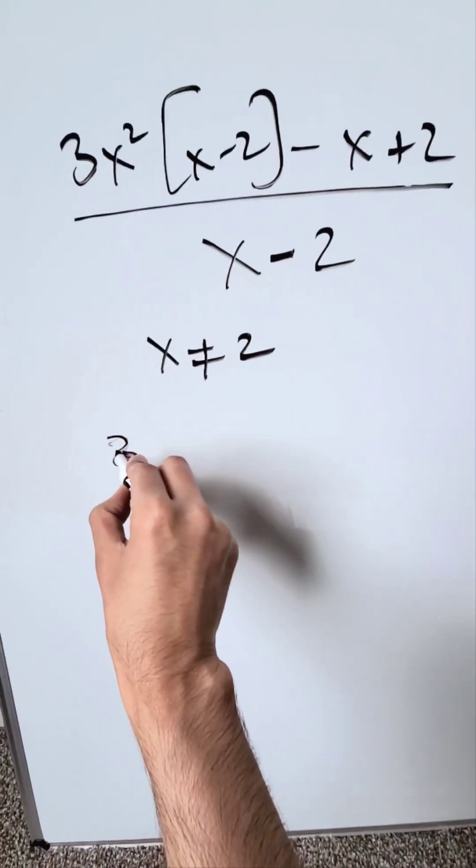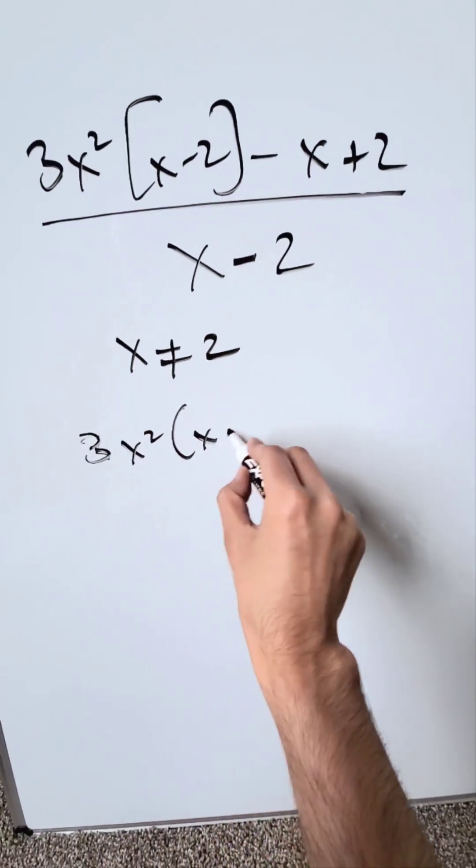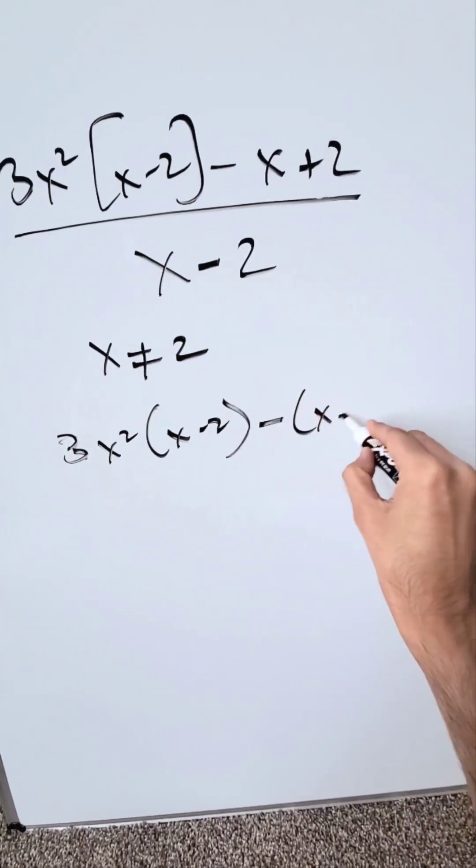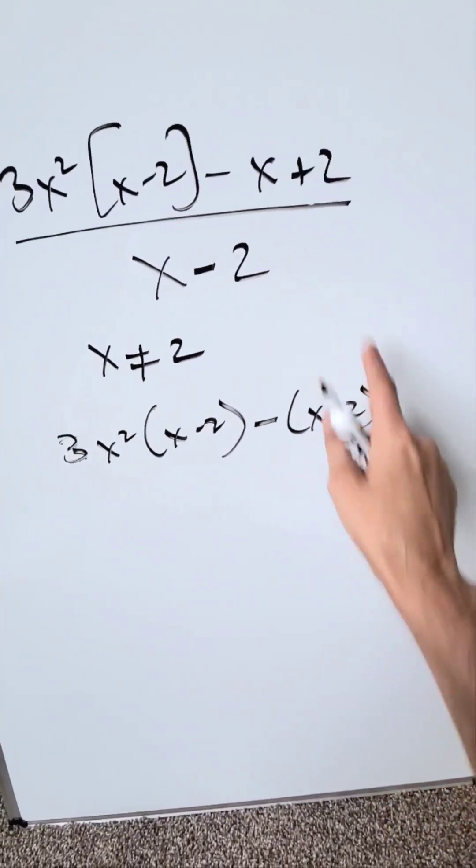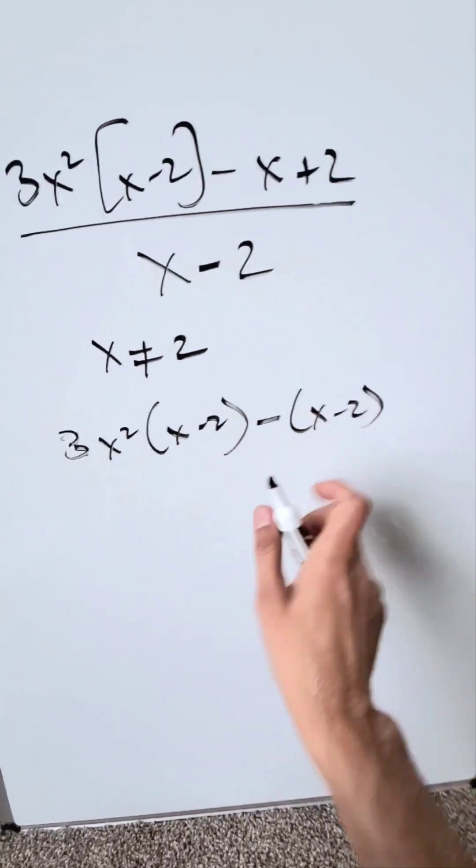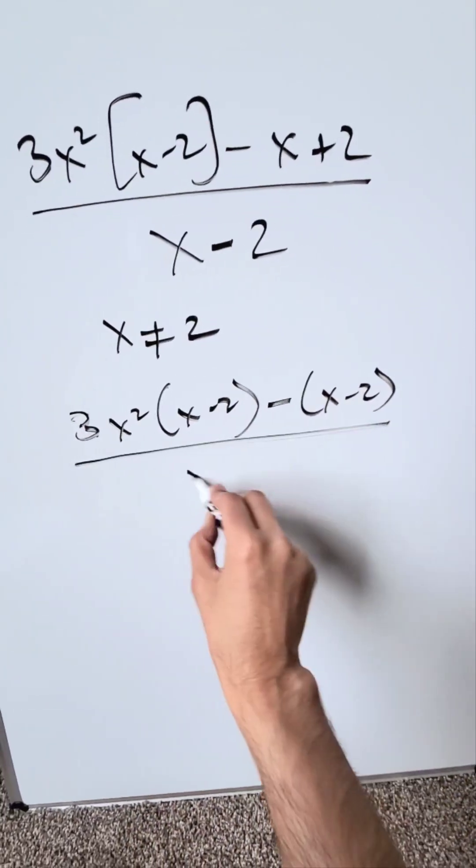Look at the numerator. You have 3x squared times (x minus 2) around this term right here. Create a parentheses minus, and it'll become (x minus 2). If you were to open this up it will give you minus x plus 2, or you can write it as minus (x minus 2). It's the same, divided by x minus 2.